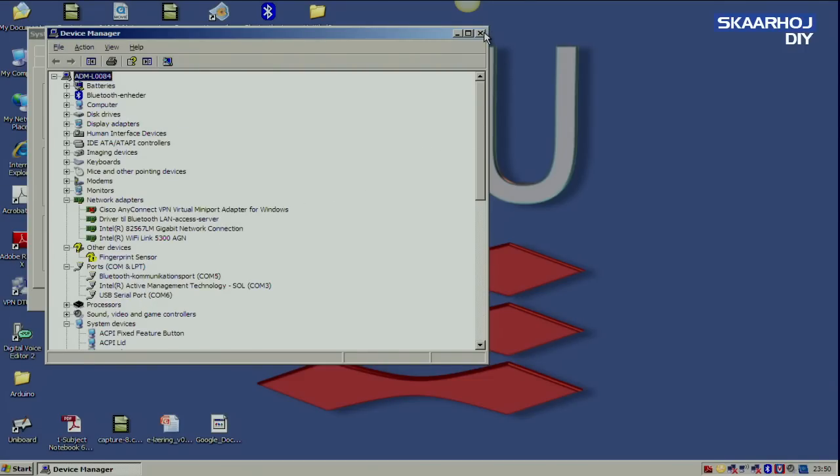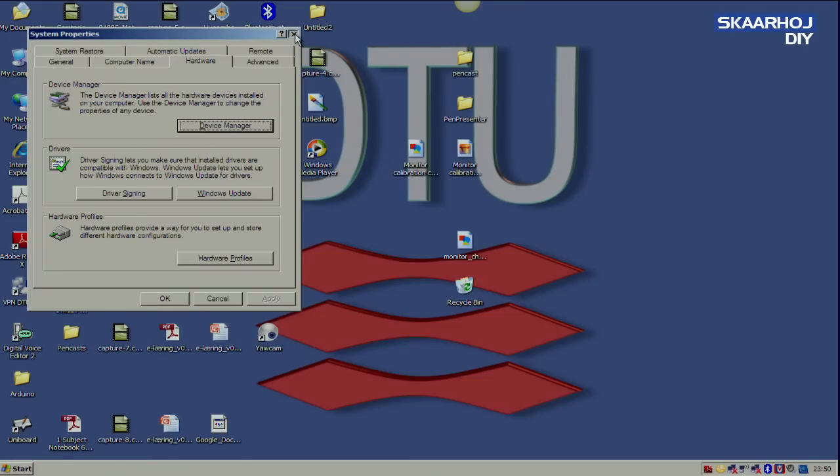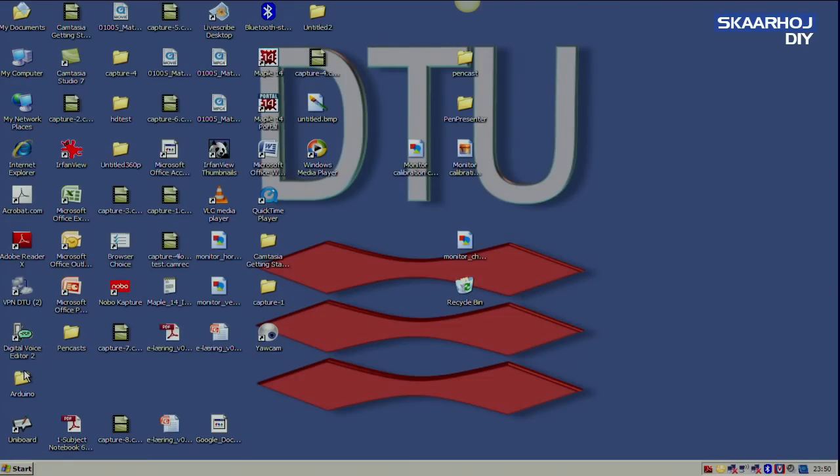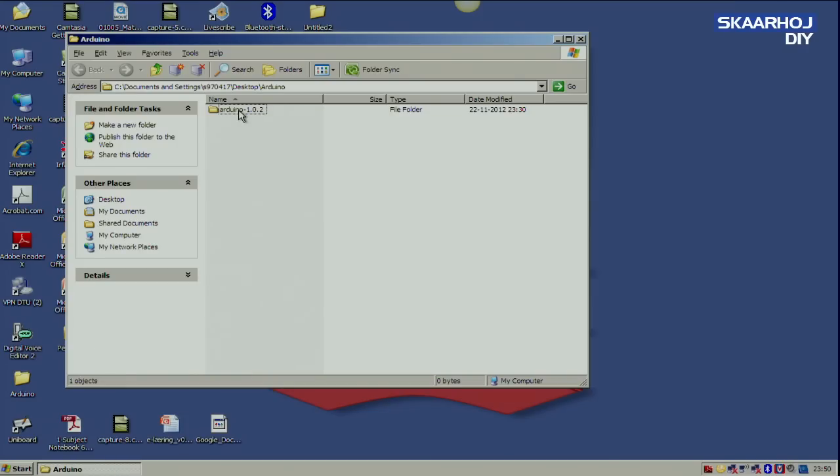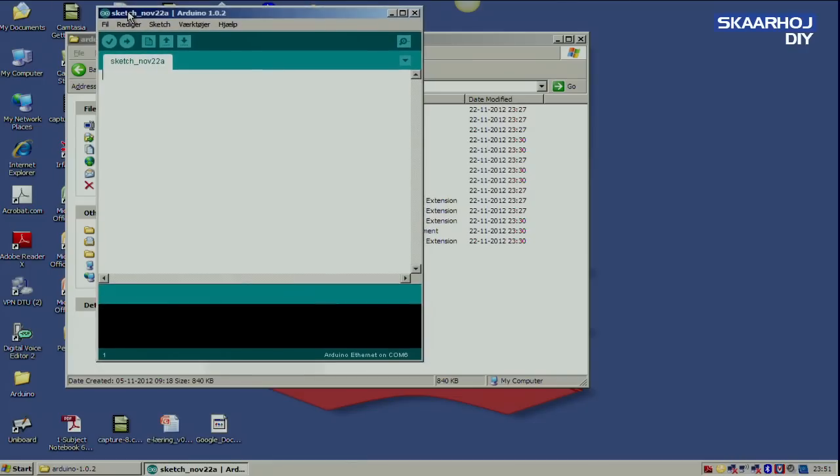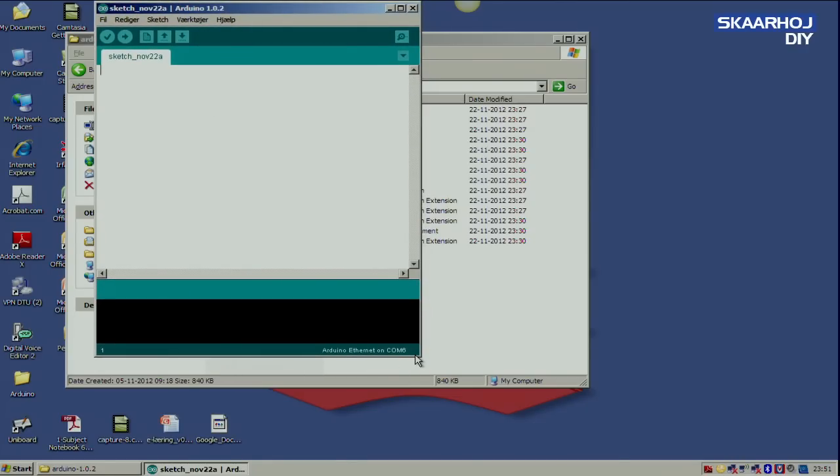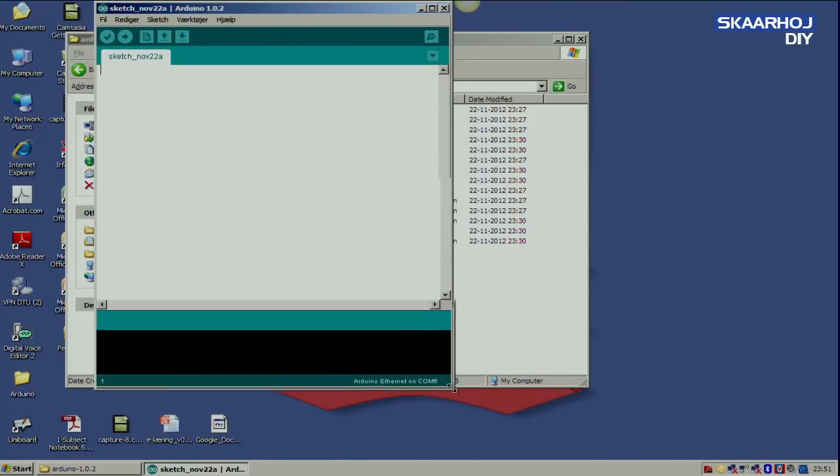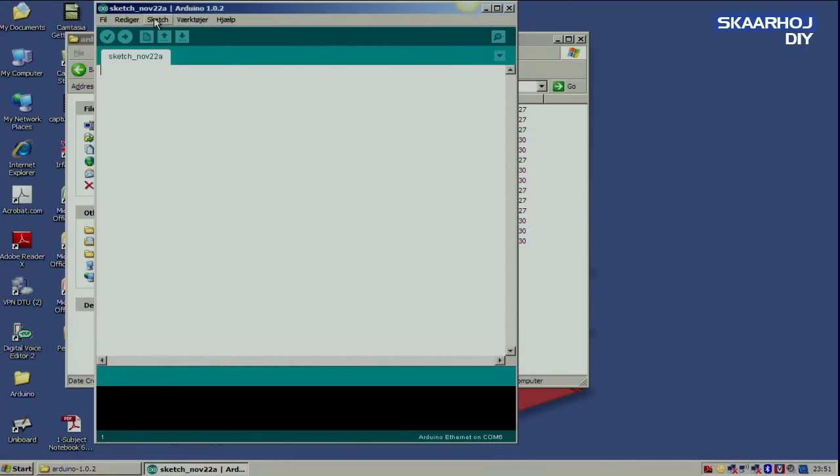All right. So now we know it's COM 6, and this is valuable because when we get back into the Arduino environment, which I'm starting up right now, then when we load the blink sketch that we are going to use now to confirm our connection to the board. So I'm just going to open this a little more.